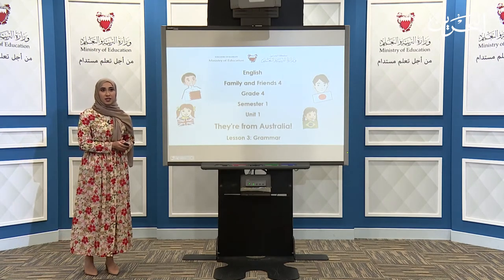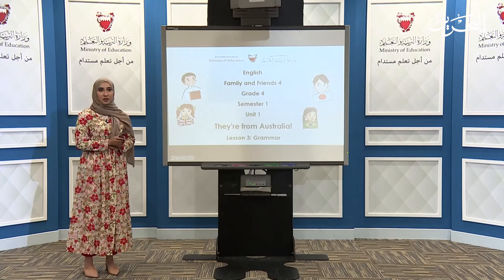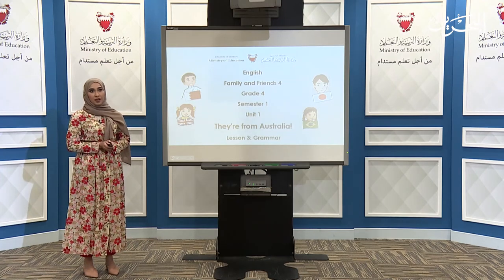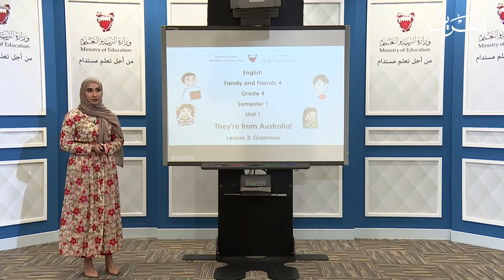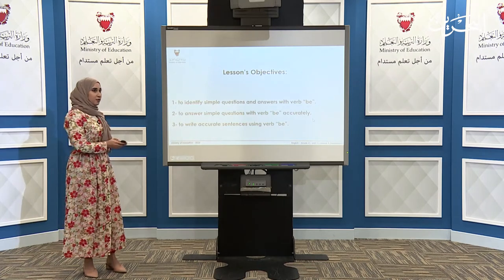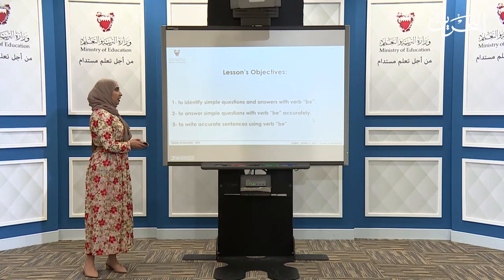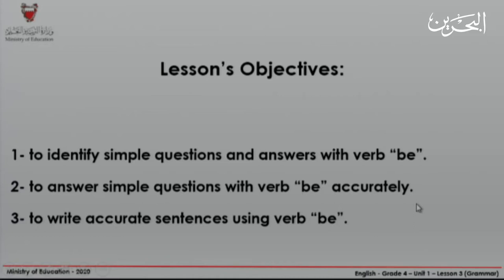Before we start our lesson, you need to make sure that you have your mini board, a marker, or a piece of paper and a pencil. Today's lesson objectives are: by the end of today's lesson, you are going to be able to identify simple questions and answers with verb BE; two, to answer simple questions with verb BE accurately; three, to write accurate sentences using verb BE.